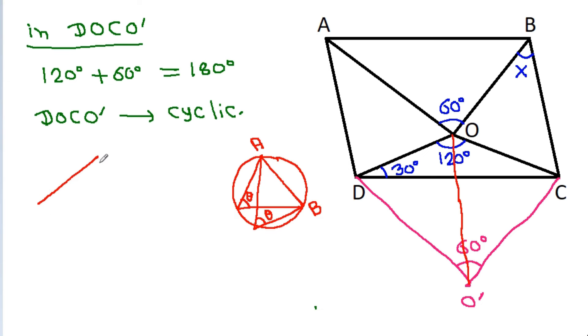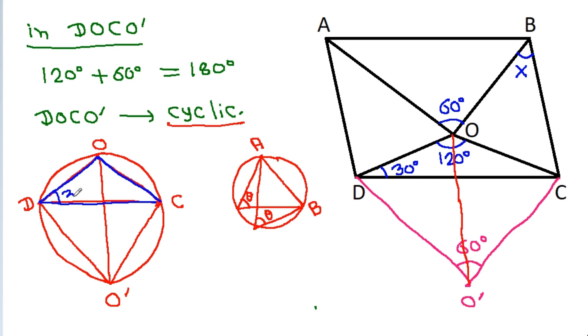And we have DOCO', and it is cyclic. That means any circle will pass through the four points of the quadrilateral. So, from the chord OC, this angle, it is 30 degrees, it will be equal to this angle. So, this angle will be 30 degrees.